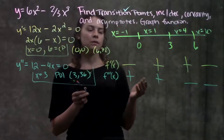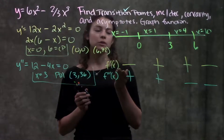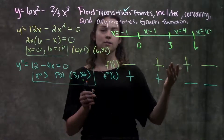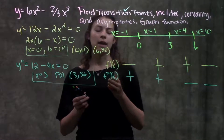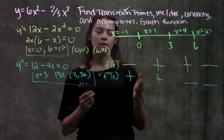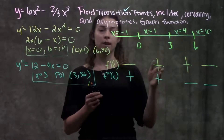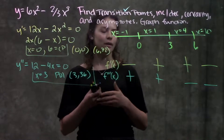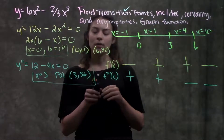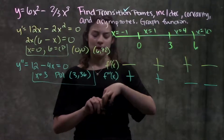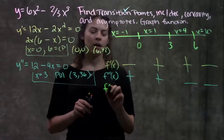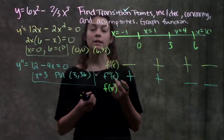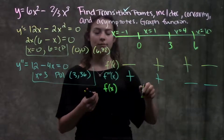This is what we'd expect — for our first derivative, the sign changed at each of the critical points, which is generally what happens. And for our second derivative, the sign changed at our point of inflection, which is also generally what happens. Now we're going to see what our function f of x looks like on each interval, so that it's easier to sketch on a graph.